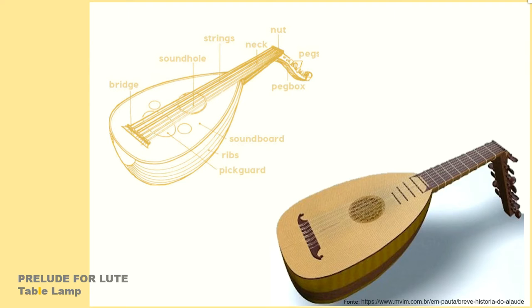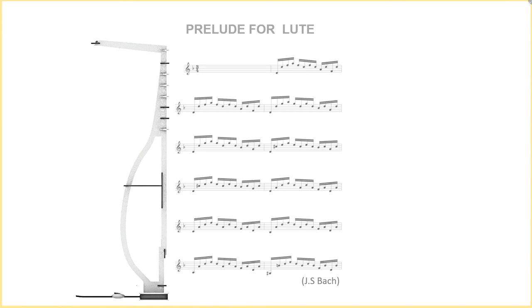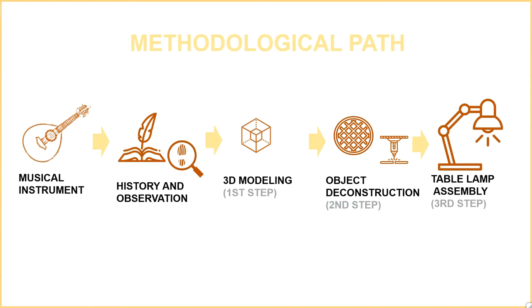The table lamp design is the result of craftsmanship, digital work, and its initial concept of Johan Sebastian Bach's Prelude for Lute song. Prelude is an introductory piece to a large work, such as an opera, for example.